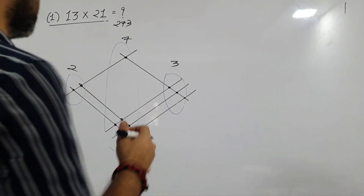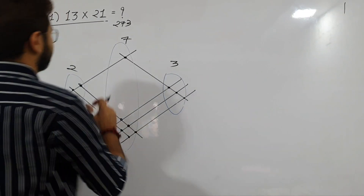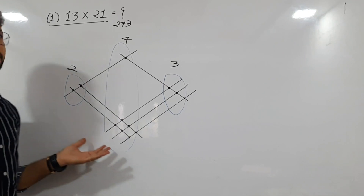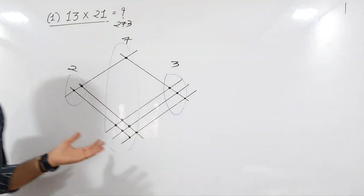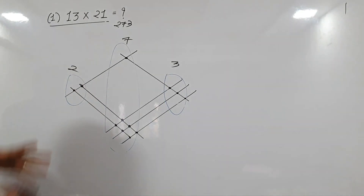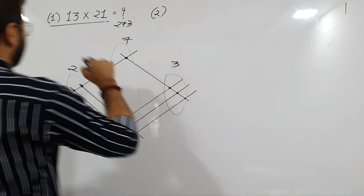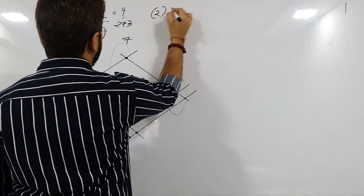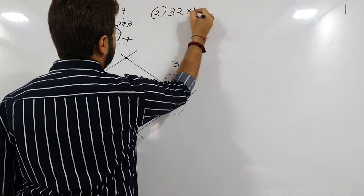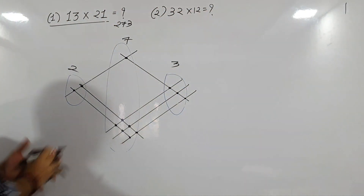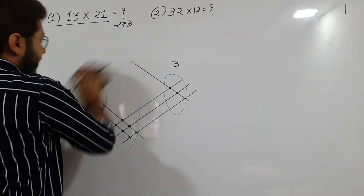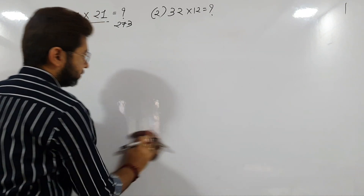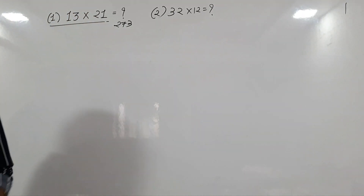I know you guys will love this method — this is the easiest method I have ever learned. Let's take another example: 32 cross 12. What's the multiplication? 32 cross 12.